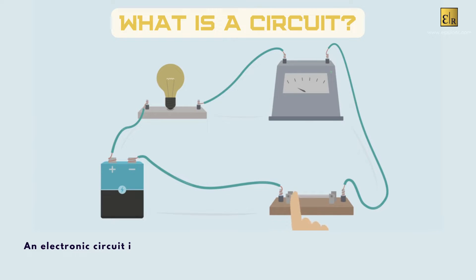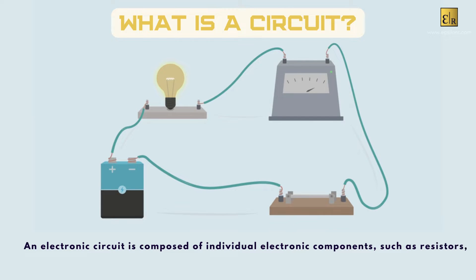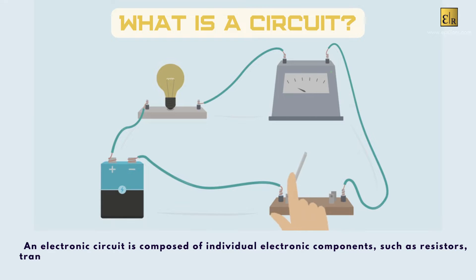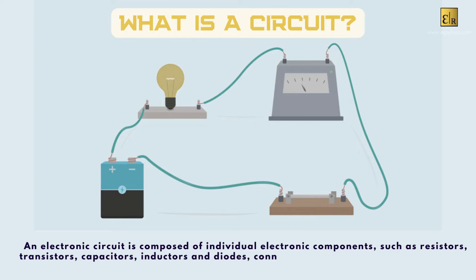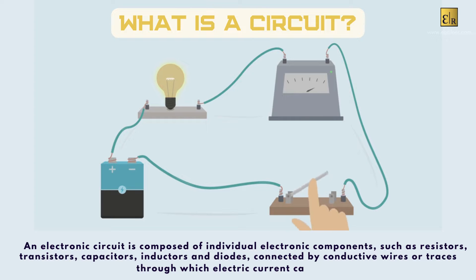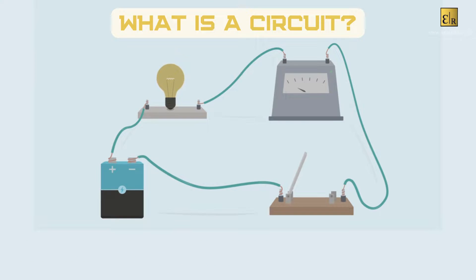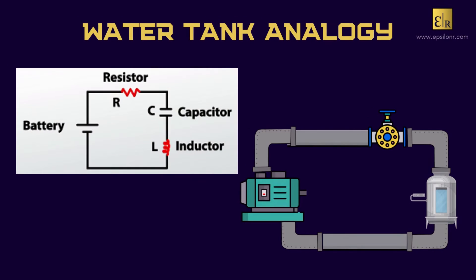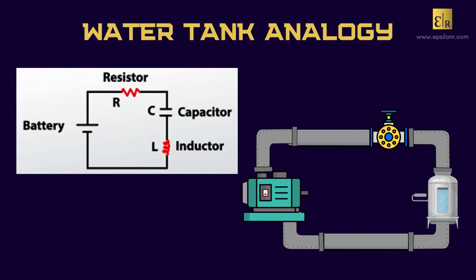An electronic circuit is composed of individual electronic components such as resistors, transistors, capacitors, inductors, and diodes, connected by conductive wires or traces through which electric current can flow. Here we have a circuit diagram and a water tank flow diagram.